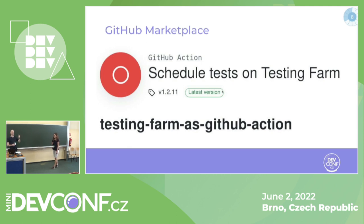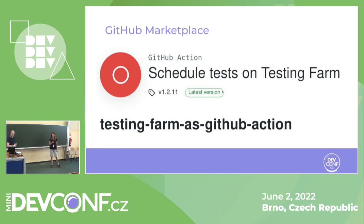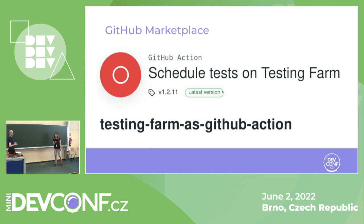We are lucky because all this is already written and we don't need to write it from scratch. This Testing Farm as a GitHub Action is available on the GitHub Marketplace. So every open source project located on GitHub can already use it.